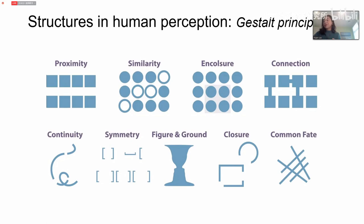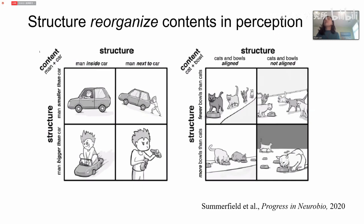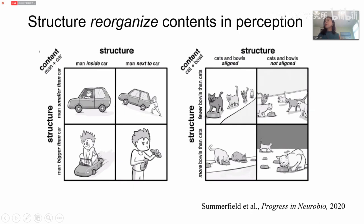Another example: even for the same contents, we can apply different structures, resulting in totally different things. For example, the contents are just a small boy and a car — the contents are exactly the same, but we can impose different structures. If we think about an inside-outside structure, we can have two different pictures: the boy within the car or the boy outside the car. Using a large-small structure, the boy could be in the car or the car could be a toy pulled by the boy. Same content organized by different structures results in different combinations.